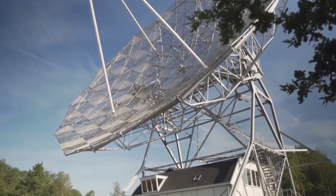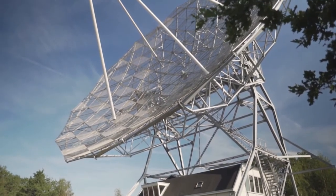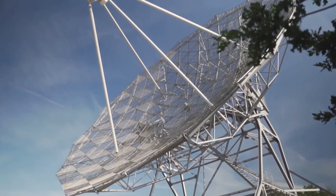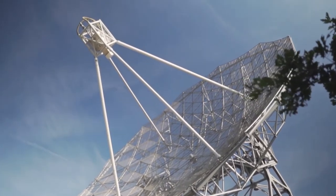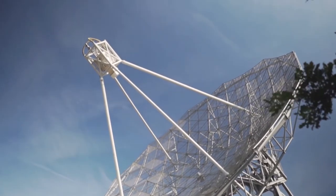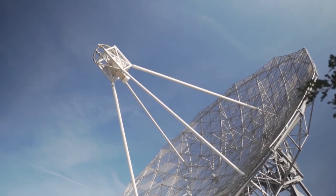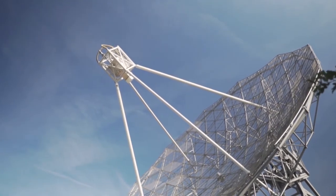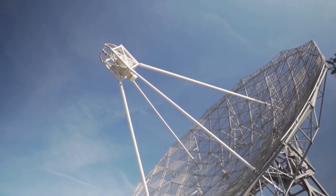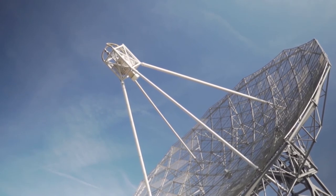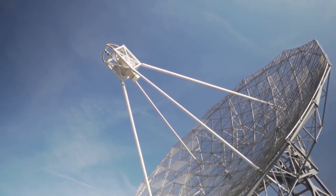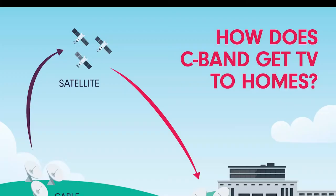Satellite TV starts with a transmitting antenna located at the uplink facility. Uplink satellite dishes are very large — as much as 9 to 12 meters in diameter. The increased diameter results in more accurate aiming and increased signal strength at the satellite. The uplink dish is pointed toward a specific satellite, and the uplinked signals are transmitted within a specific frequency range.